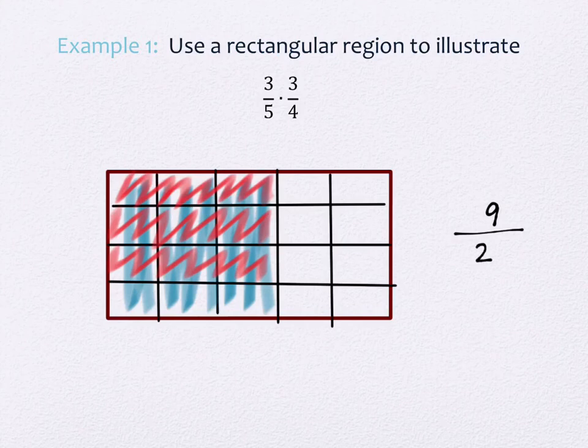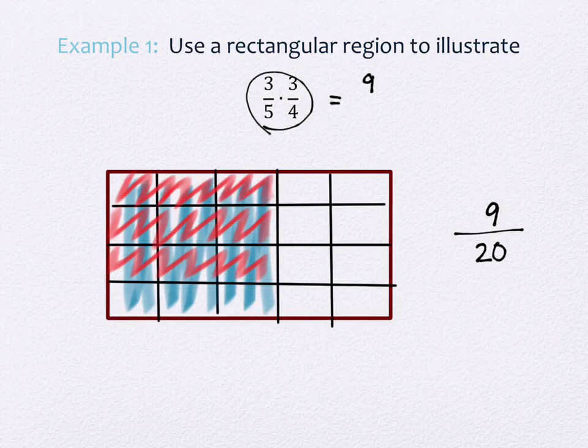Five vertically, four horizontally gives twenty. If you look back at these numbers, that's exactly what happens when you multiply straight across the top and straight across the bottom. This picture is the visual representation of three-fifths times three-fourths.